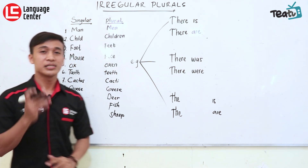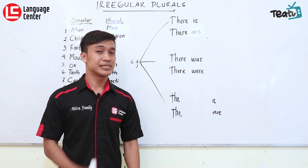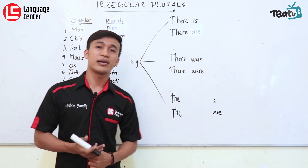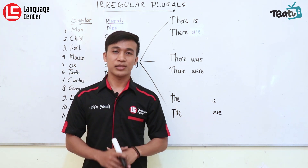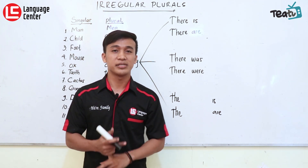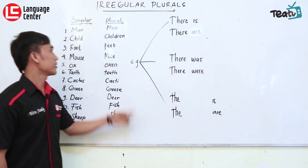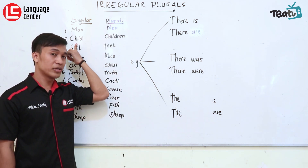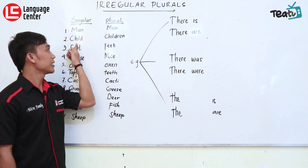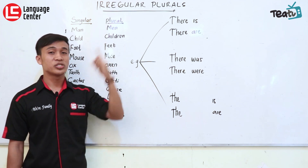Yang kedua adalah 'child'. Tidak ada 'childs'. Kalau memang anaknya lebih dari satu, perubahannya menjadi 'children'. Child itu singular — kalau sendiri. Kalau anaknya banyak, menjadi 'children'.